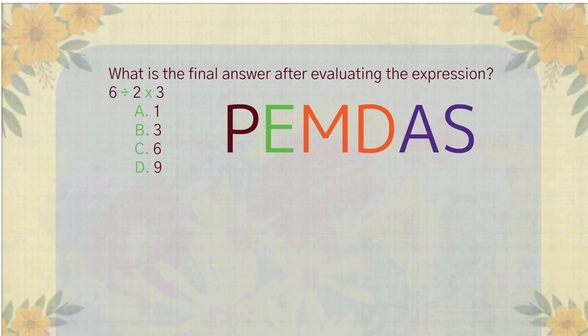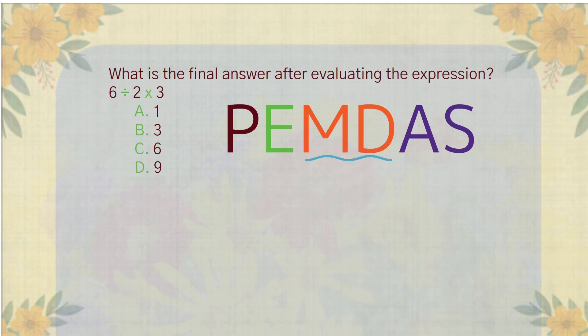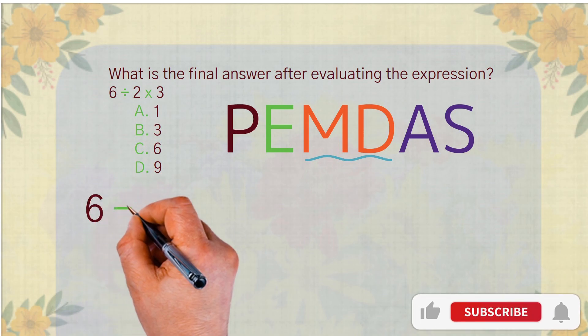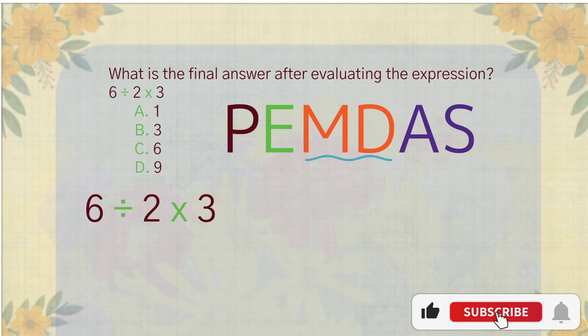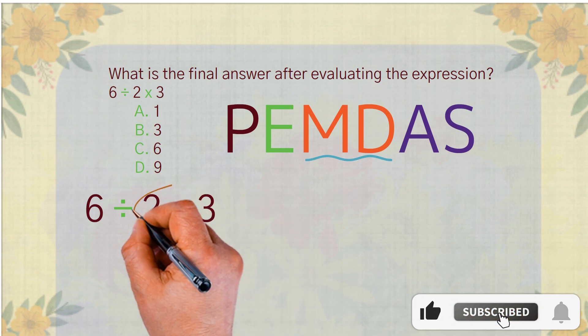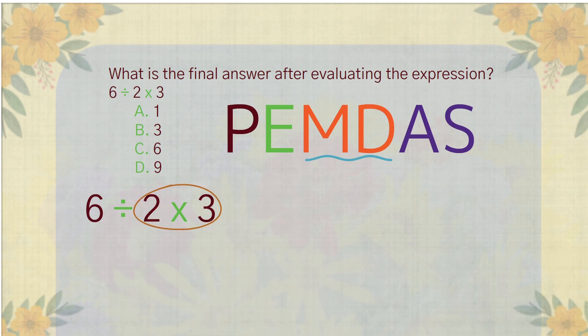Some think that multiplication always comes before division just because M is listed first in PEMDAS. Let's see how some people get it wrong. They might see 6 divided by 2 times 3 and think they should multiply first just because M comes before D in PEMDAS.